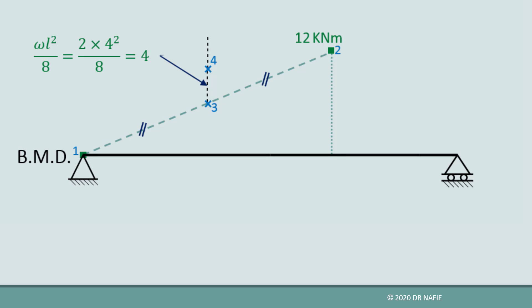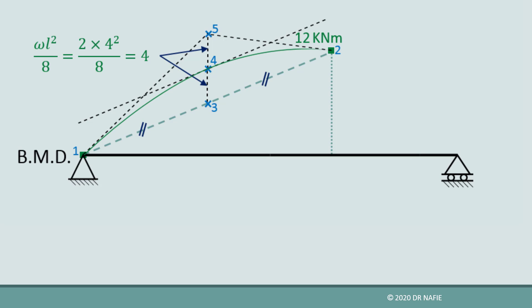From point 4, we go up an identical distance of 4 kilonewton meters to locate point 5. Next, we draw three tangent lines to the parabola: the first connects points 1 and 5, the second connects points 2 and 5, and the third passes through point 4 and is parallel to line 1-2. Finally, we draw the parabola as a curve tangent to the three lines and passing through points 1, 2, and 4.